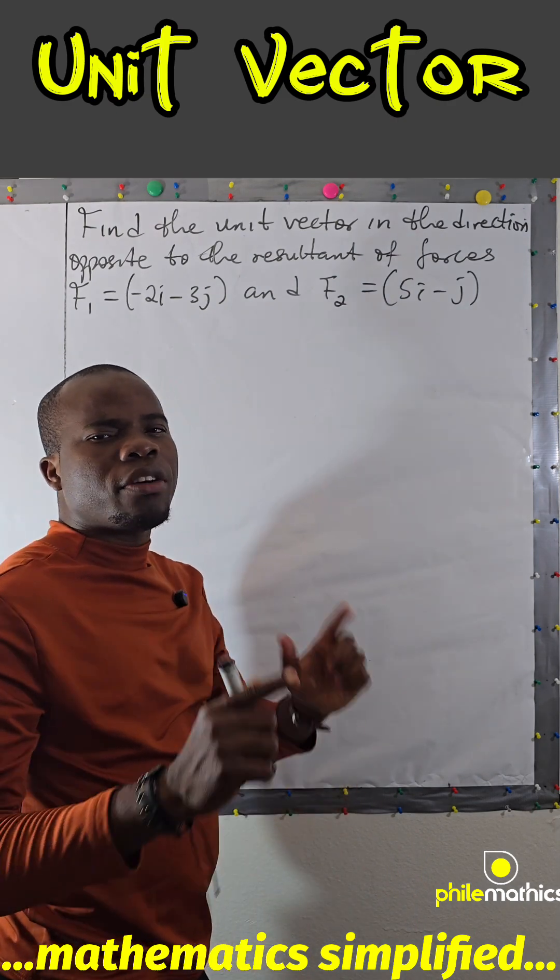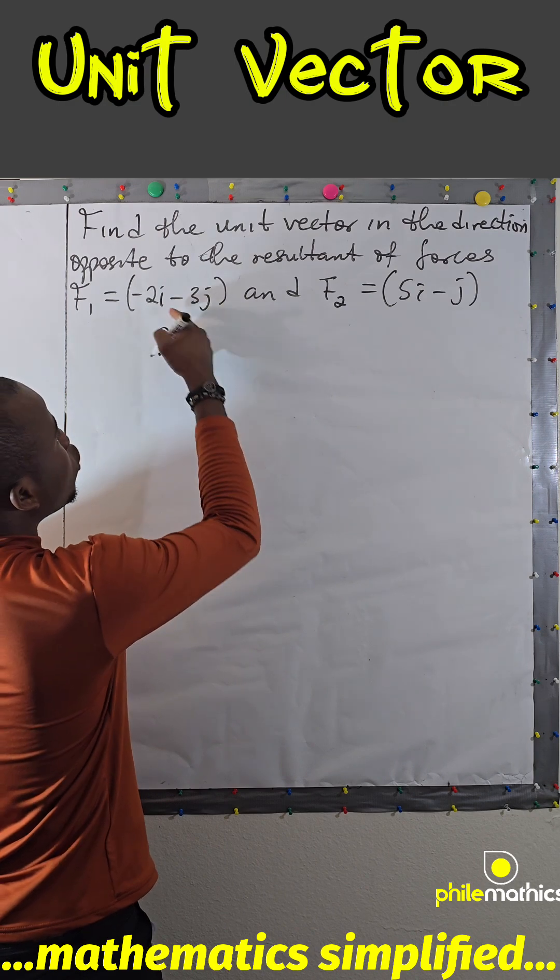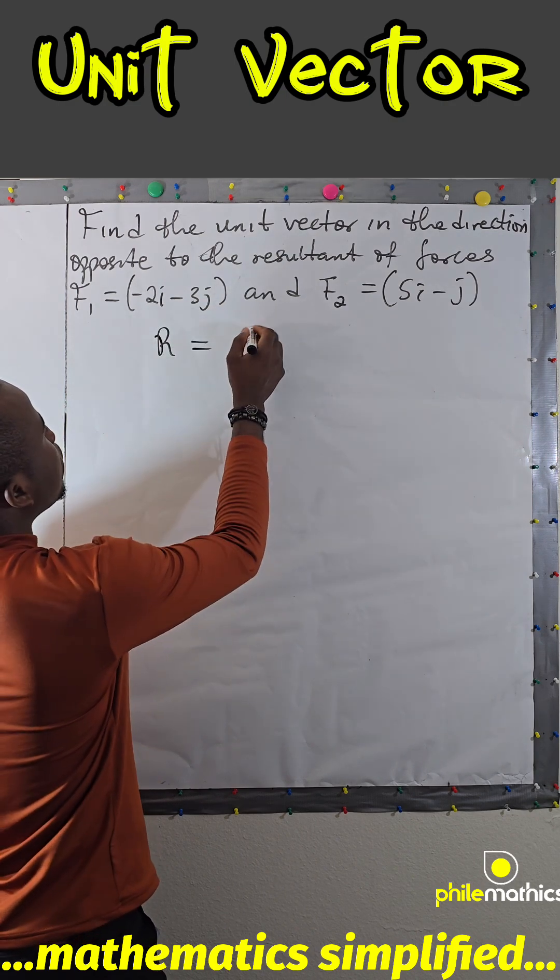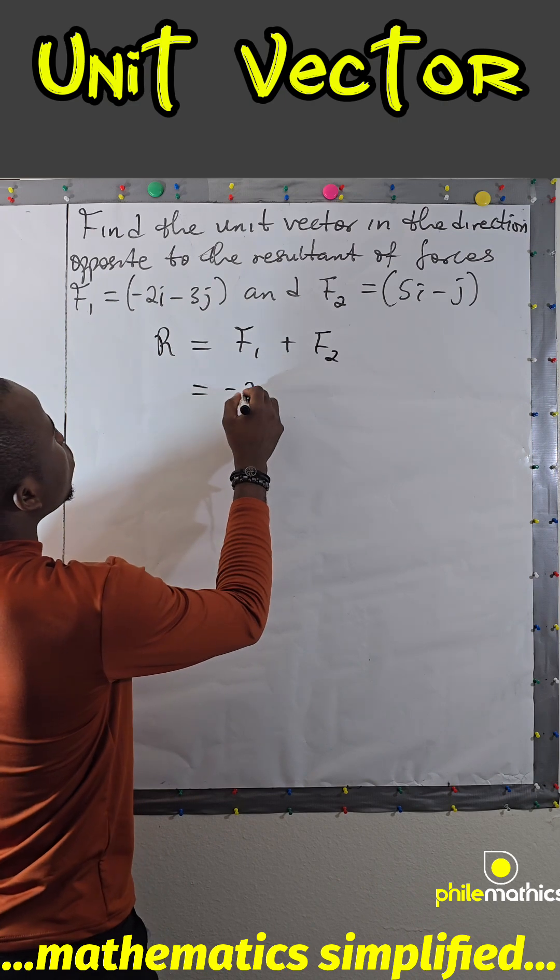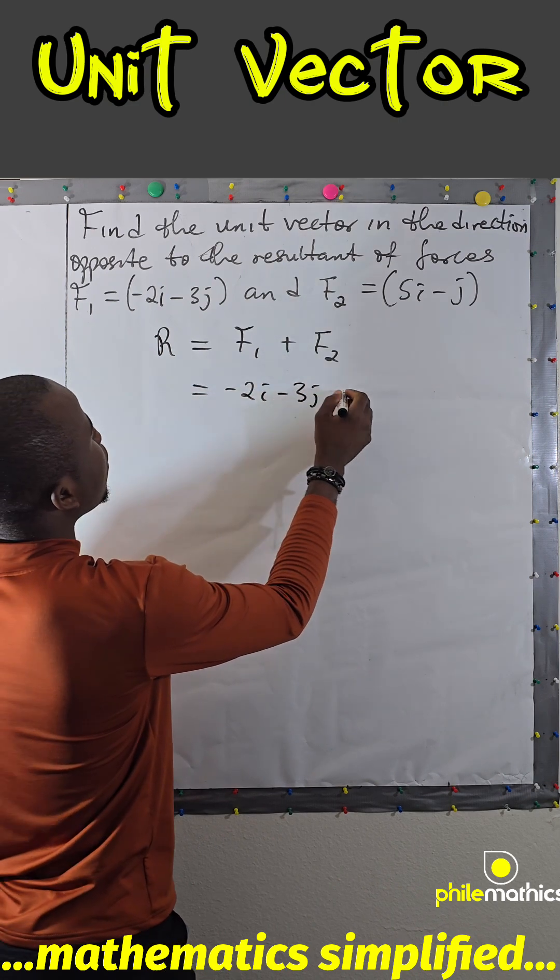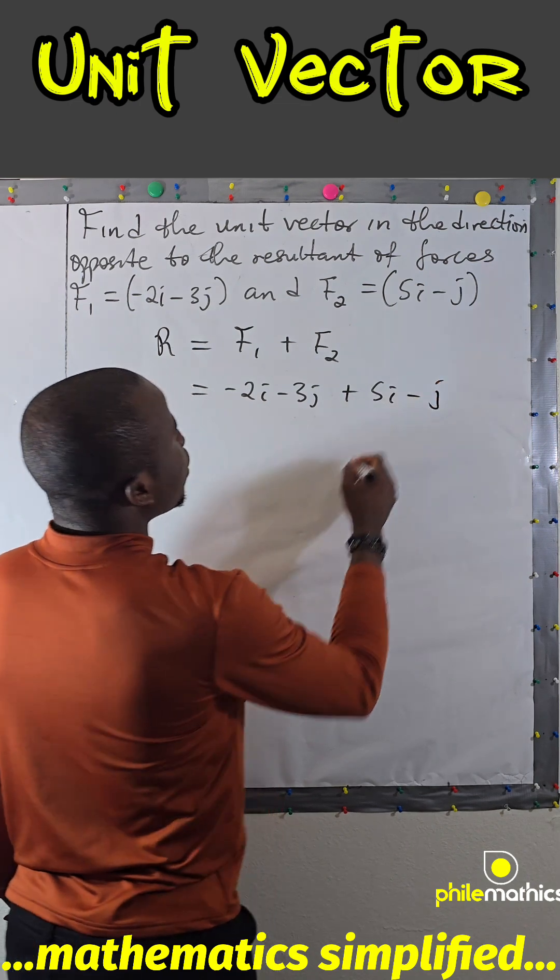You want to first of all look for what the resultant vector is. The resultant vector is the sum of these two vectors which is f1 + f2, and so this would be -2i - 3j + 5i - j.